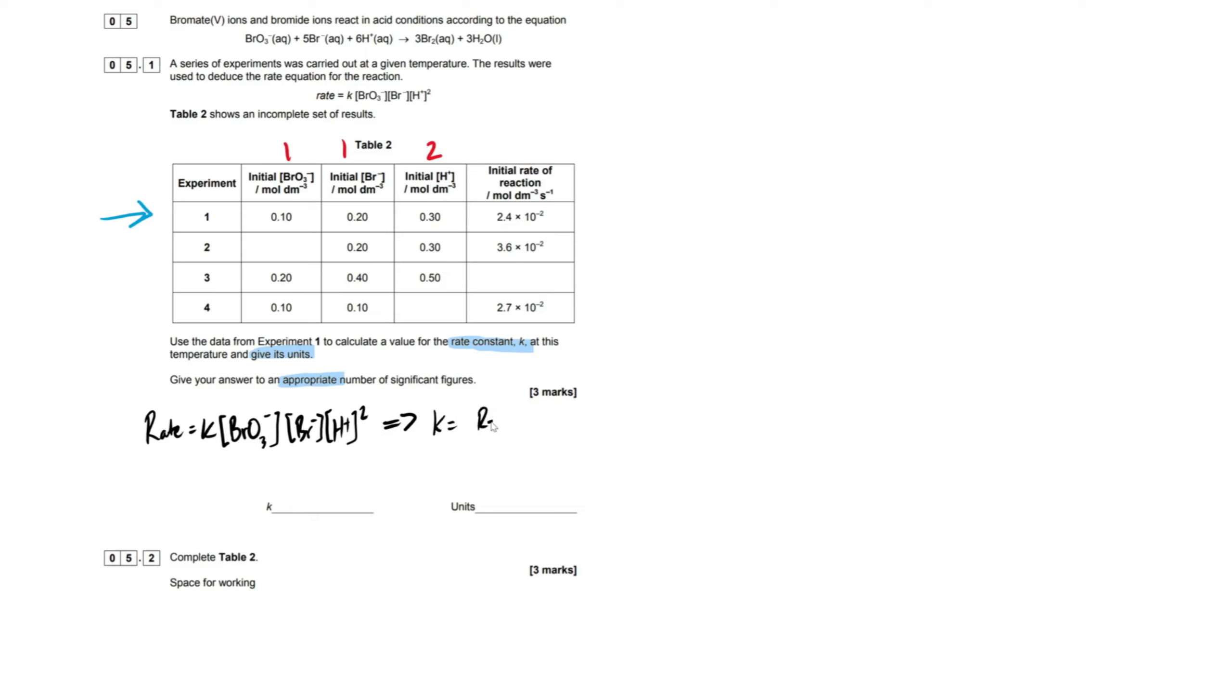So if I rearrange this, all I have to do to get k on its own is just divide both sides by all three of these. So all three of these are going to go to this side and it's going to be rate divided by all of these concentrations. So k equals our rate divided by all of this. What I'm going to do here, actually, instead of just doing this so I'd have to rewrite it all over again, I'm just going to put all our variables in one time. So 2.4 times 10 to the minus 2 is our rate.